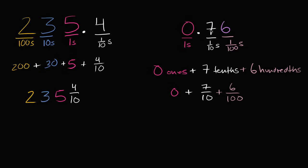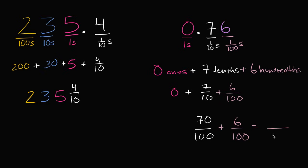Now another way we could write this: if we wanted to write it as a single fraction, I could add the seven tenths to the six hundredths. So how could I write seven tenths in terms of hundredths? Well, seven over ten is the same thing as 70 over a hundred. If I multiply the denominator by ten, I can multiply the numerator by ten as well and not change the value. Seven tenths is the same thing as 70 hundredths. Then you add six hundredths to that, and that gives you 76 hundredths. So a lot of people will call this zero point seven six, or 76 hundredths.